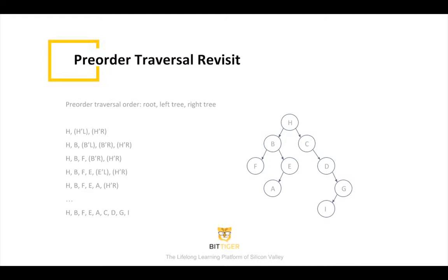Pre-order traversal is similar to in-order, but we need to put root first, then left tree, then right tree. Given the same graph, we put H as the first node because H is the root, then H's left tree, and H's right tree.